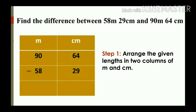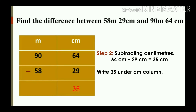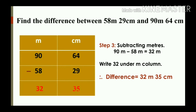Now let's see the subtraction of metres and centimetres. Find the difference between 90 metres 64 centimetres and 58 metres 29 centimetres. Step 1: arrange the given lengths into two columns of metres and centimetres. Step 2: subtract centimetres — 64 cm − 29 cm = 35 cm; write 35 under the centimetres column. Step 3: subtract metres — 90 m − 58 m = 32 m; write 32 under the metres column. Therefore the difference is 32 metres and 35 centimetres.